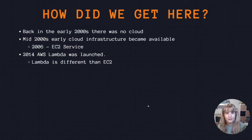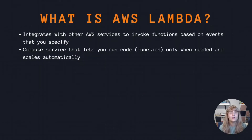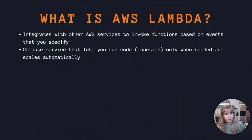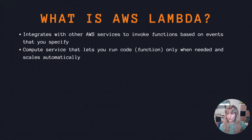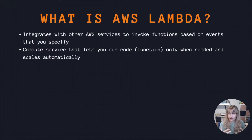AWS Lambda integrates with other AWS services to invoke functions based on events you specify — those events from event-driven architecture. As we learned, it's a compute service that lets you run your code — a function — only when needed, and it scales automatically. You only pay for the compute time you use. For example, you can use Lambda to build data processing triggers for other AWS services, or create your own back-end microservice that operates at AWS scale, performance, and security.